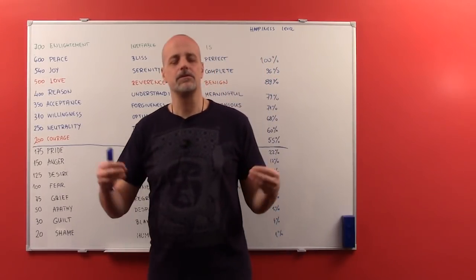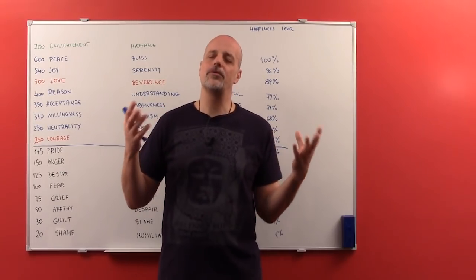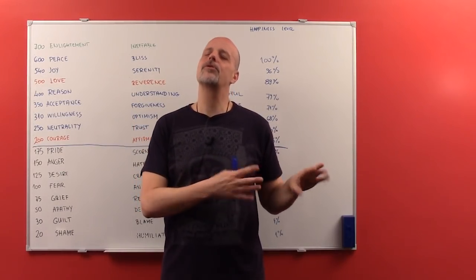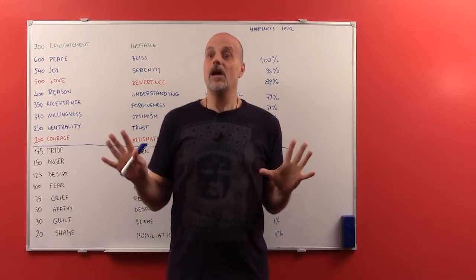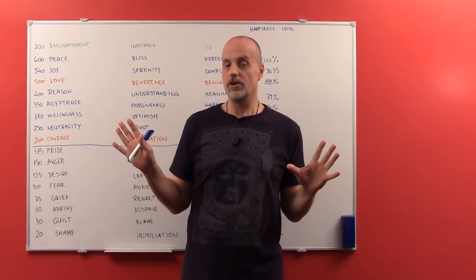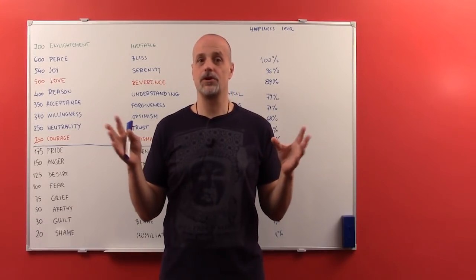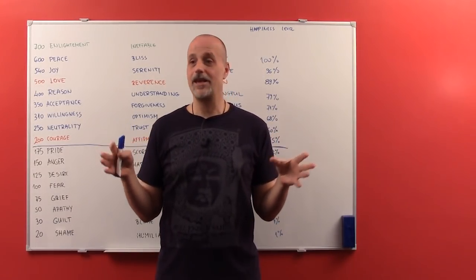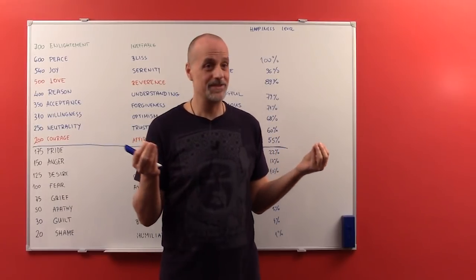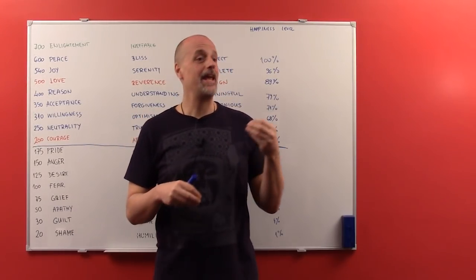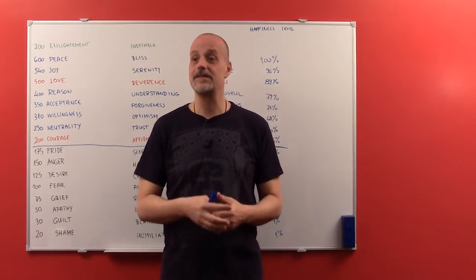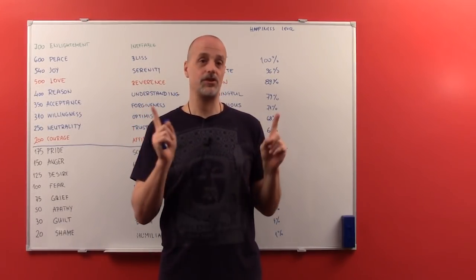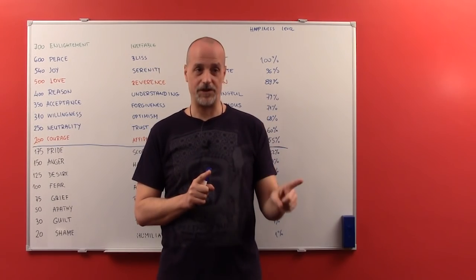You will just close your eyes and you will think happy thoughts and you will try not to think about your fears. And then your phone will ring and you will jump. Who's calling me now? What's going on? And there goes your happy thought. If you really want to have happy thoughts and memories and emotions and perceptions and reactions, you need to change your vibratory level first.